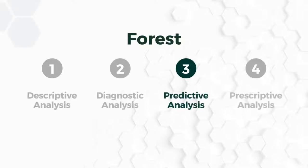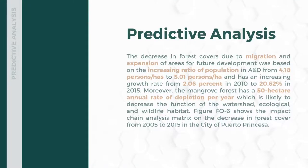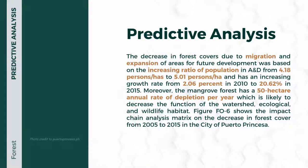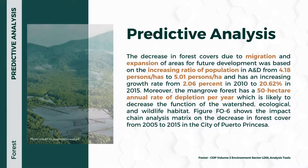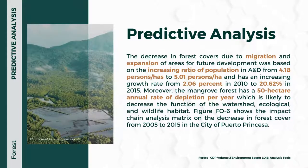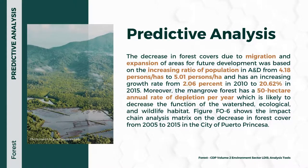Architect Jay Cariño will discuss the prediction and prescription based on the descriptive and diagnostic analysis. For the predictive analysis, the decrease in forest cover due to migration and expansion of areas for future development was based on the increasing ratio of population in alienable and disposable land, from 4.8 persons per hectare to 5.01 persons per hectare, and an increasing growth rate from 2.06% in 2010 to 20%.